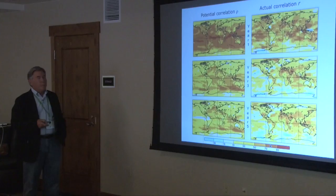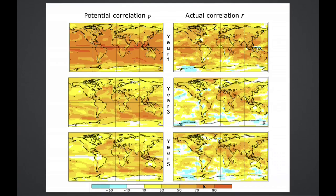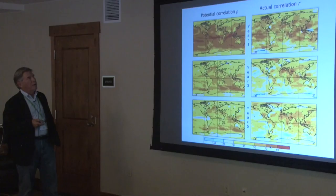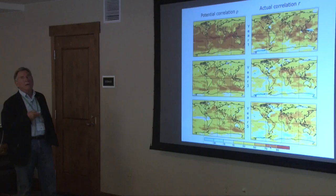In practice, if we apply these ideas to a real experiment like the one we've performed with our model, we can look at what we get in terms of potential correlation and actual correlation. For year one, we do quite well. Year three, somewhat less well. Year five, somewhat less well. The potential correlation is typically greater than the actual correlation, which is just what we expect. We might convince ourselves that we can do better and make the actual approach the potential if we had a better model or improved things in some way.